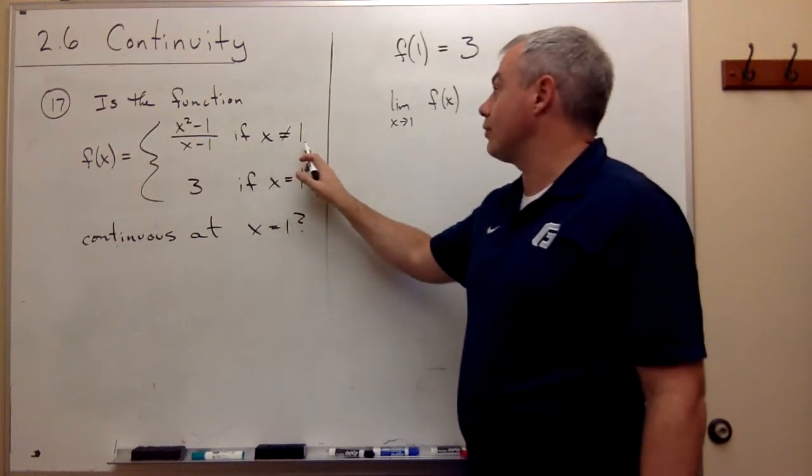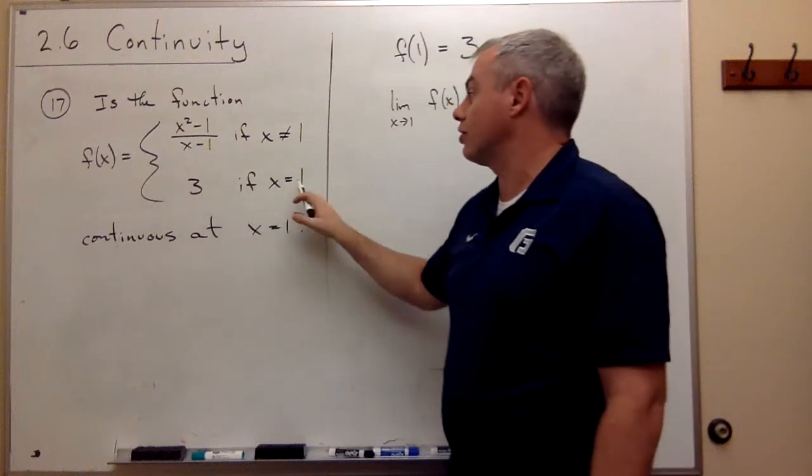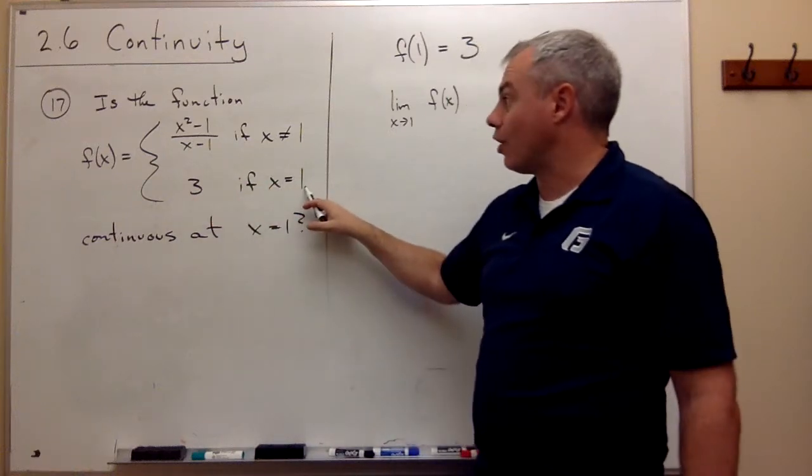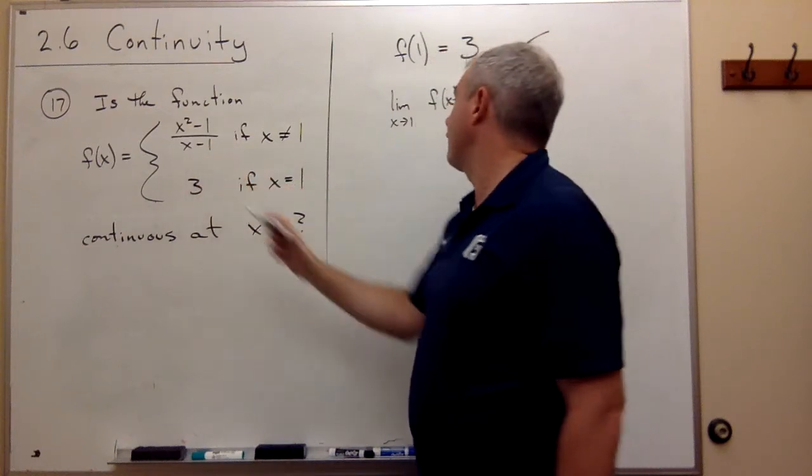So, x is not equal to 1 when we're calculating the limit as x goes to 1. So, we don't use the 3 because we're not at 1. We're getting close to 1. So, we use this definition of the function.